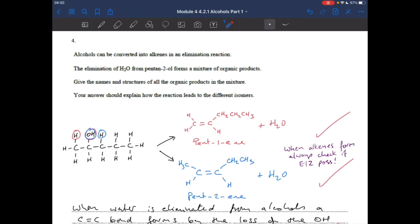So question four, we're reminded that alcohols are converted into alkenes in an elimination reaction. Elimination of water from pentan-2-ol forms a mixture of organic products. Give the names and structures of all the products in the mixture, and answers should explain how the reaction leads to different isomers. Okay, so we'll go for the reaction first. So there's my pentan-2-ol.